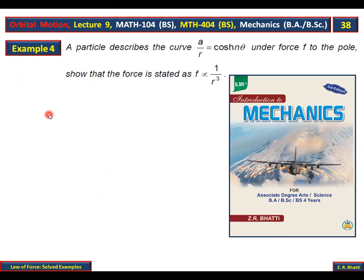Next example number 4. A particle describes the curve a over r equals cosine hyperbolic n theta under force f to the pole. Show that the force is stated as f is proportional to 1 over r cubed.